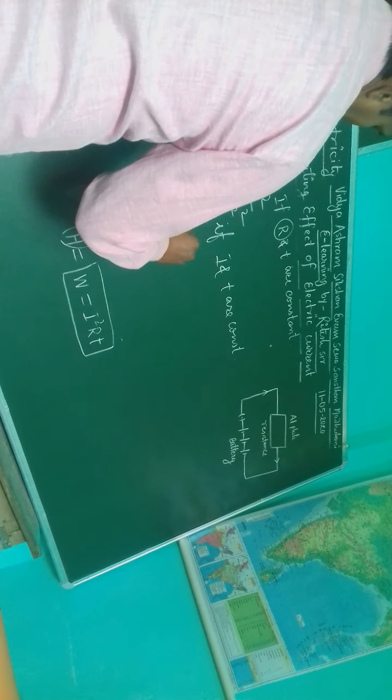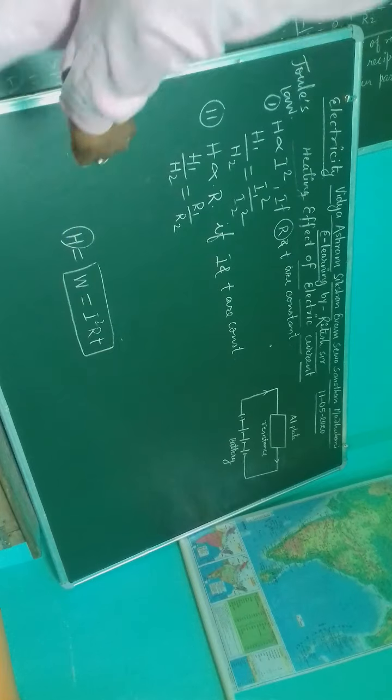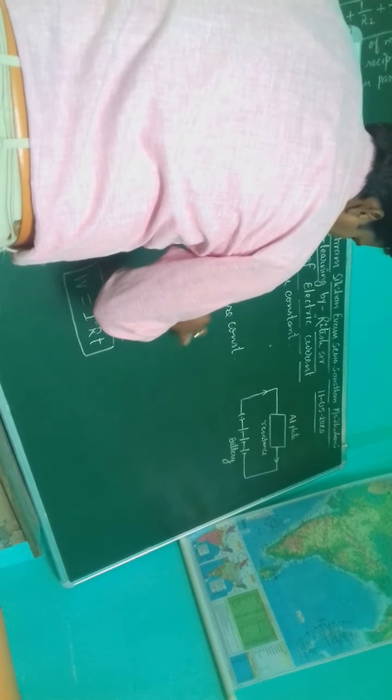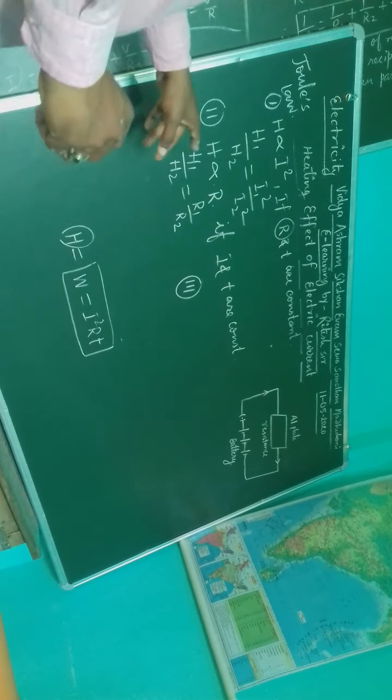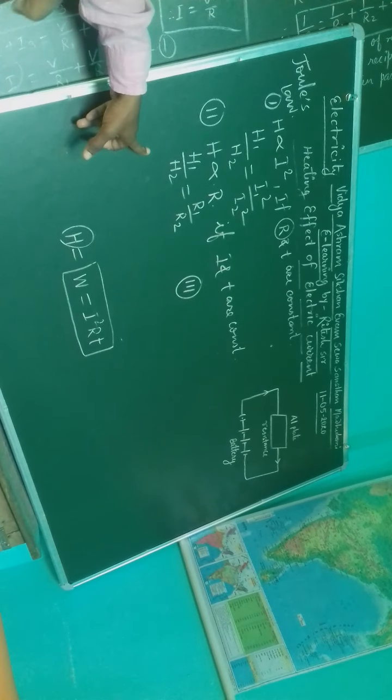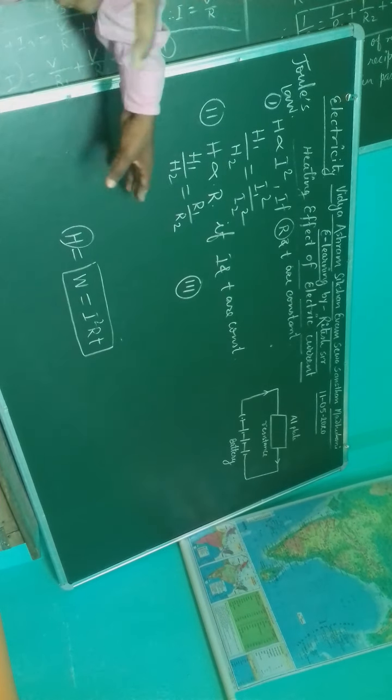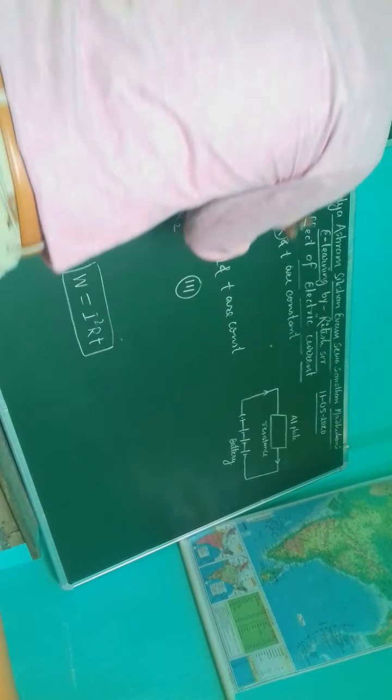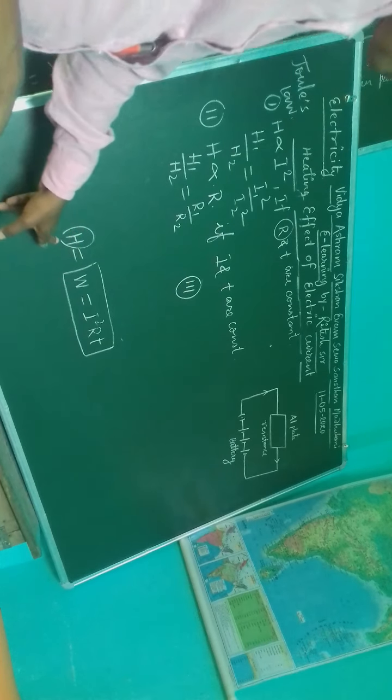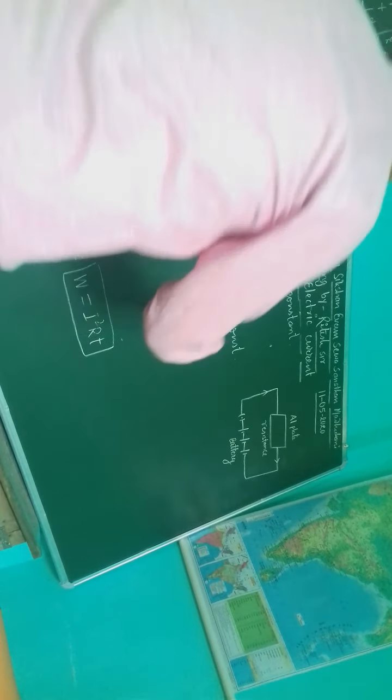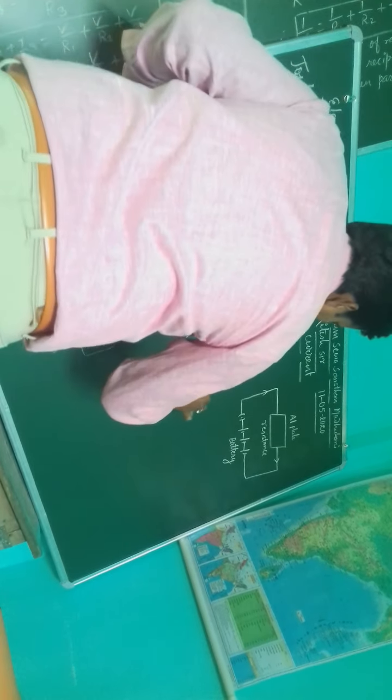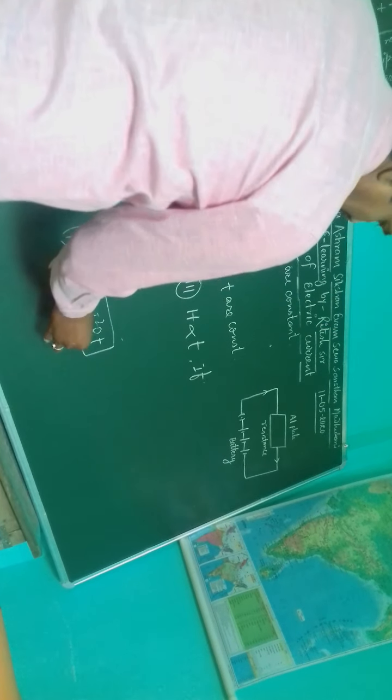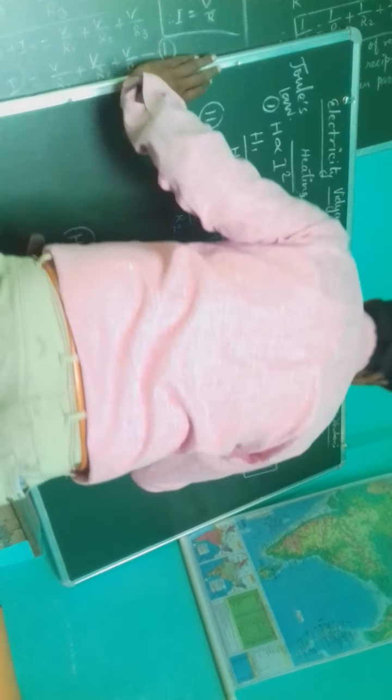H will be proportional to T, only if I and R both are constant. I and R are constant. Got it? So please write it down.